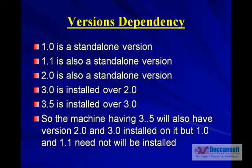.NET Framework 1.0 was a standalone version, 1.1 also was a standalone version, and 2.0 is also a standalone version. Suppose if you have used .NET Framework 1.1 for development and you want to deploy your application on another machine — even if that machine has .NET Framework 2.0, your application is not going to work unless .NET Framework 1.1 is also installed on that machine. The development version and the production version of .NET Framework must be the same.